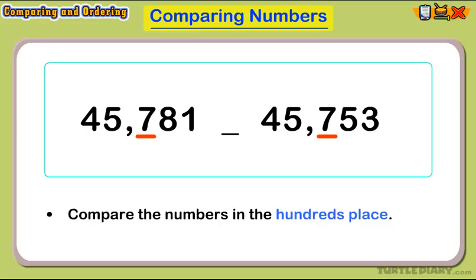The 7 is in the hundreds place for both numbers. This doesn't help us determine which number is bigger, so we move to the next place value.